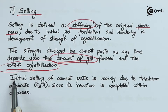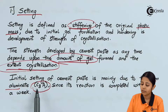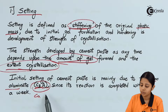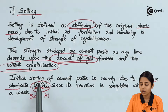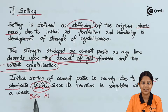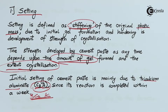Initial setting of cement base is mainly due to tricalcium aluminate, also known as C3A. Tricalcium aluminate has three calciums and one aluminium — written as Ca₃Al, or in cement notation as C3A, where C stands for calcium (not carbon). Since its reaction is completed within a week, let us now see the reactions of C3A.